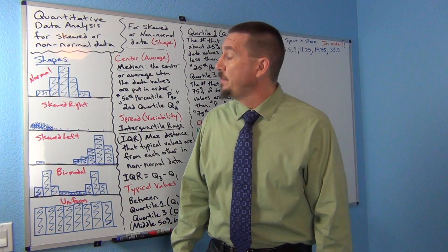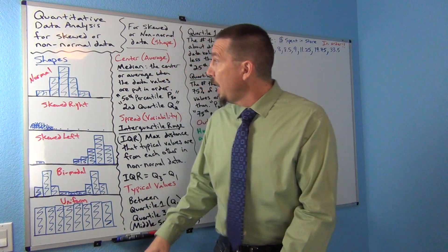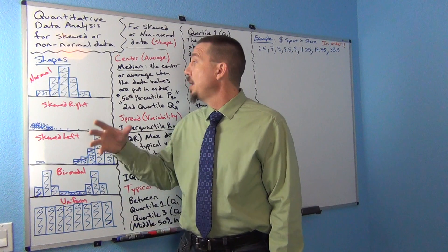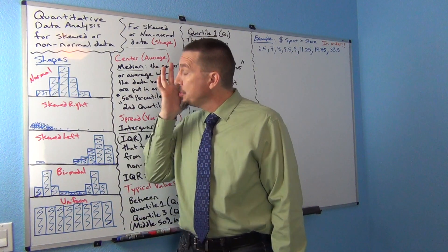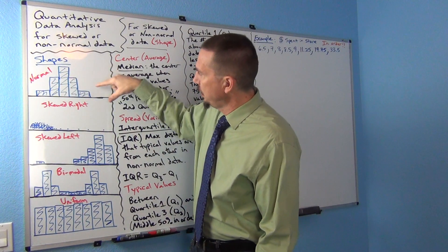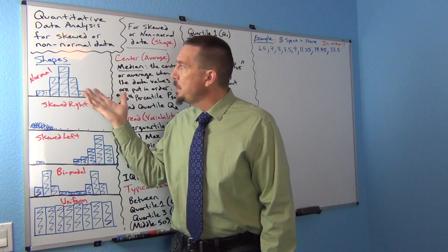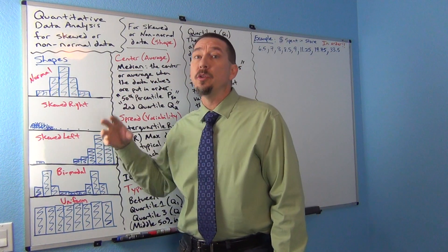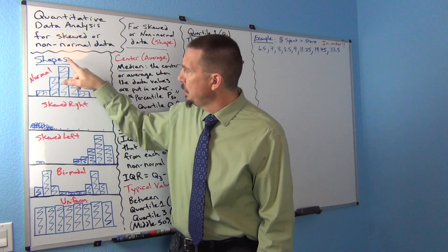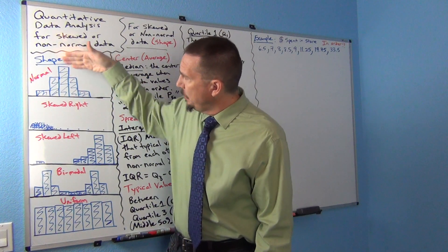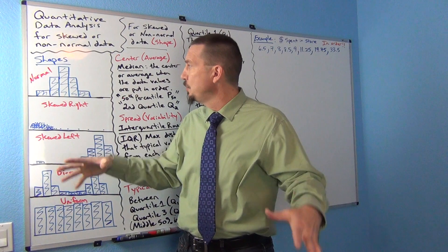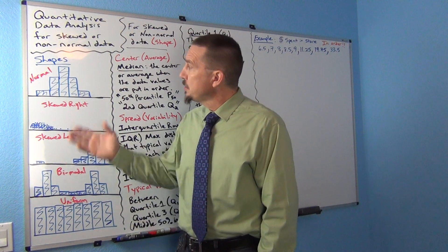So let's take a look at a few different shapes. Last time we talked about this shape which we call normal, or sometimes people refer to it as bell shape because it kind of looks like an upside down bell. The highest bar is in the middle and as we get away from the middle the bars get smaller. That's called normal.